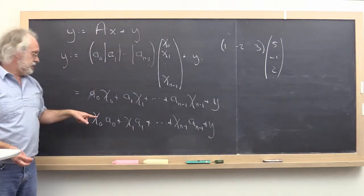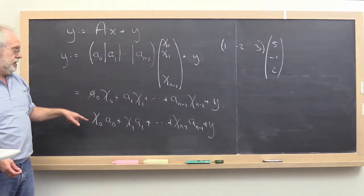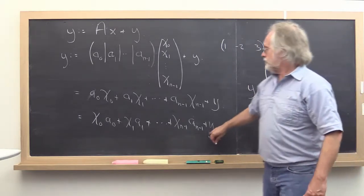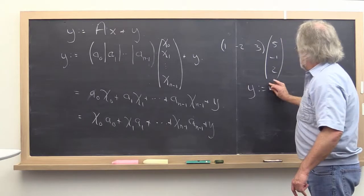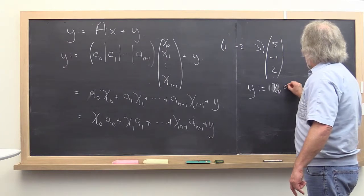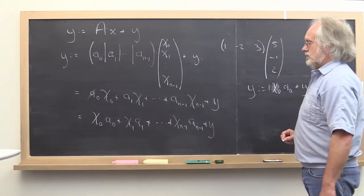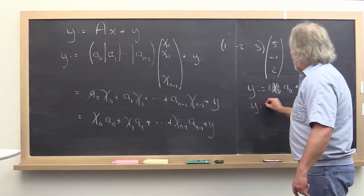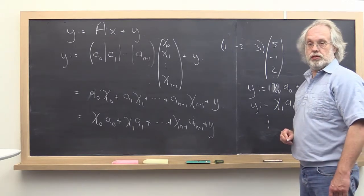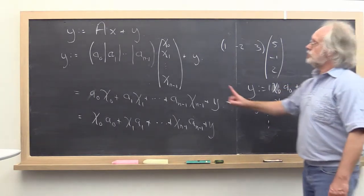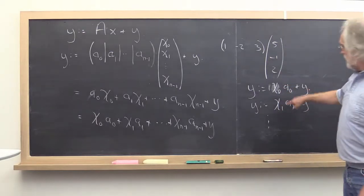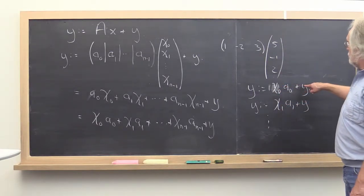And now hopefully you start to see where the Axby operations come in. You start with a vector y. You add to it chi zero times A0. Then you update it with chi 1 times A1 and so forth. So what you really have is a loop that goes over the columns of A, the elements of x, and at each step you do a scalar times a vector added to the vector.